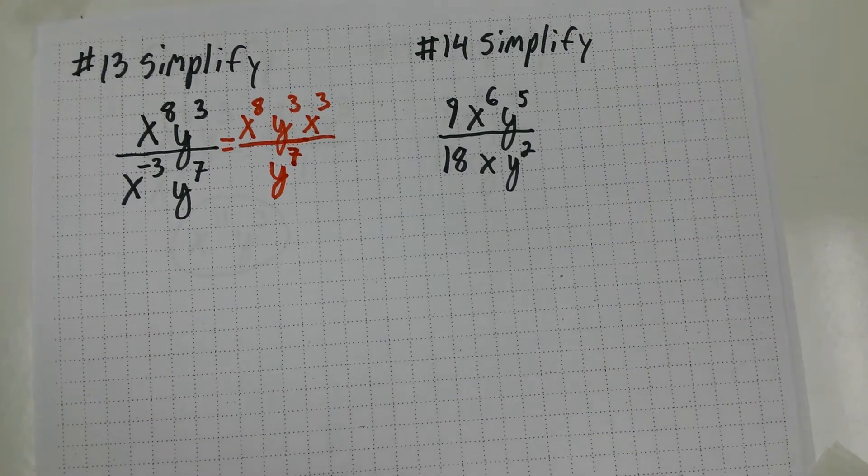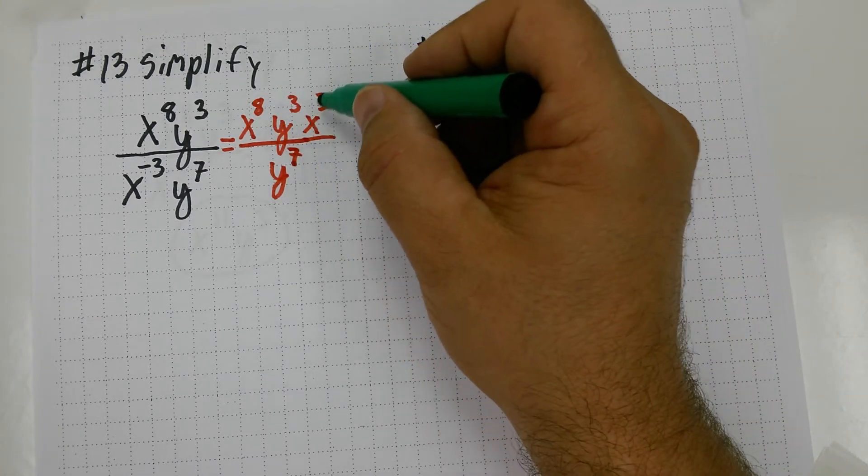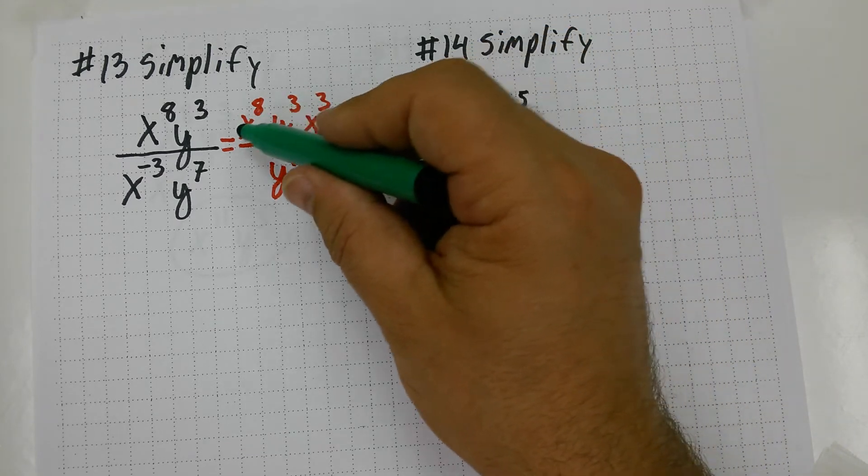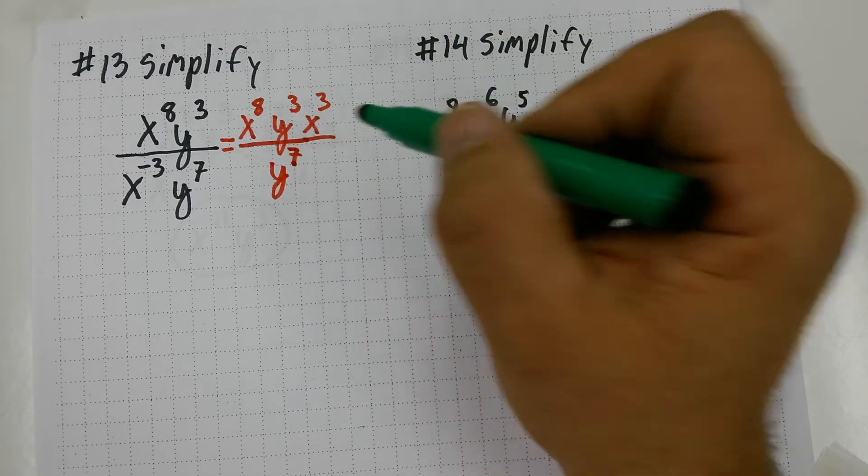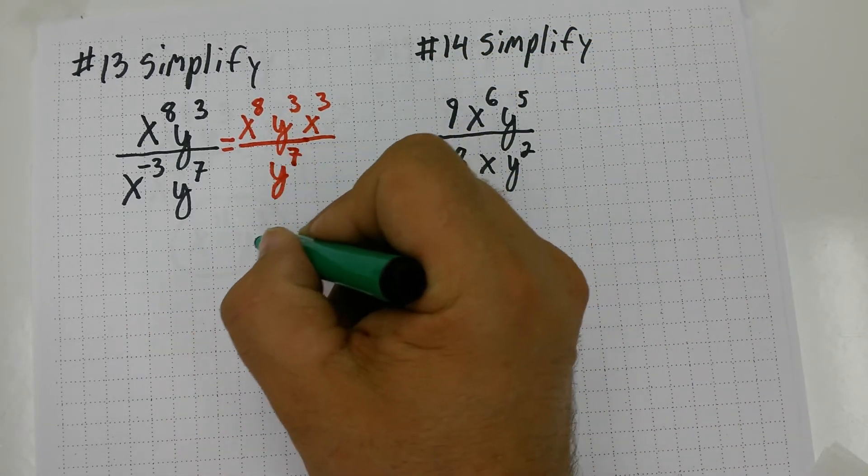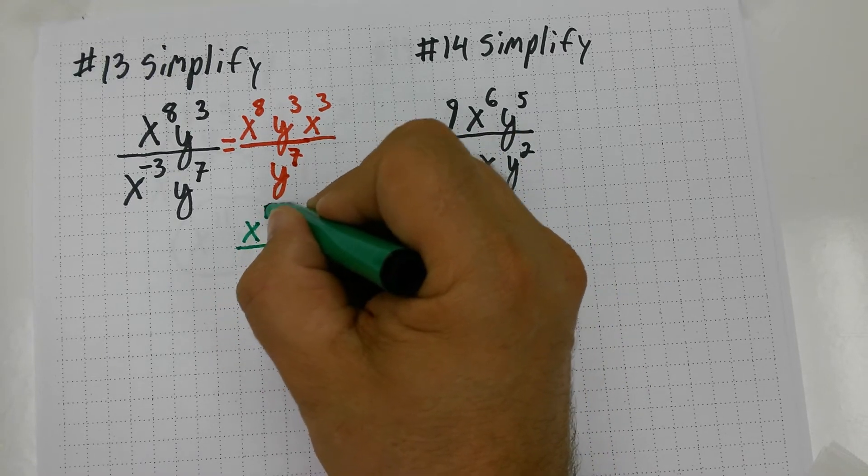Now I have to simplify this a little bit further. I notice I have an x to the eighth times an x to the third. When you multiply like bases, that means you add the exponents. So x to the eighth times x to the third, well, that's going to give me x to the eleventh on top.